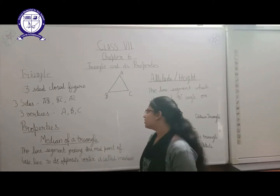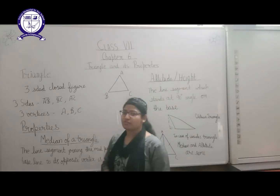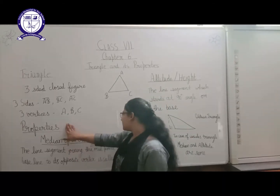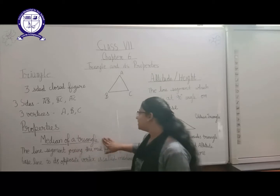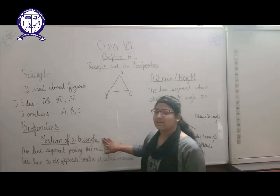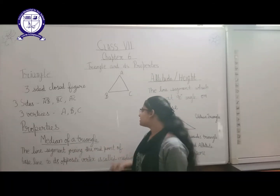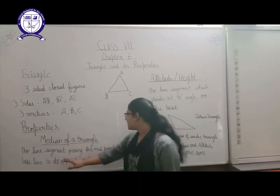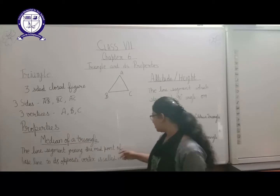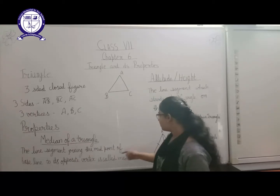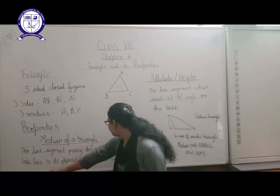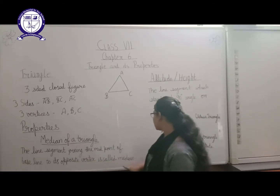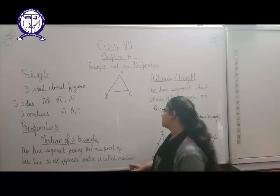Now we will talk about the properties of a Triangle. The first property is the Median of a Triangle. The line segment joining the midpoint of the baseline to its opposite vertex is called the Median.